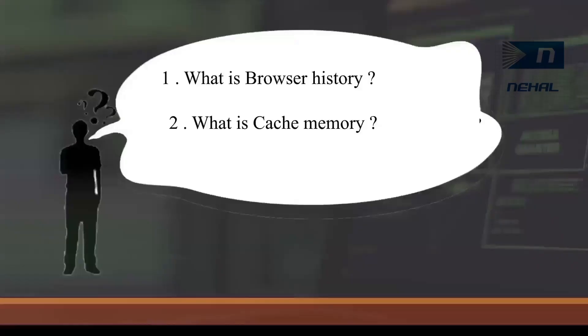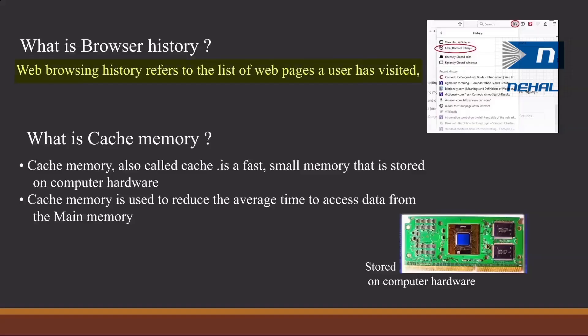What is browser history? What is cache memory? Web browsing history refers to the list of web pages you have visited. Cache memory, also called cache, is a fast, small memory stored on computer hardware. Cache memory is used to reduce the average time to access data from the main memory.